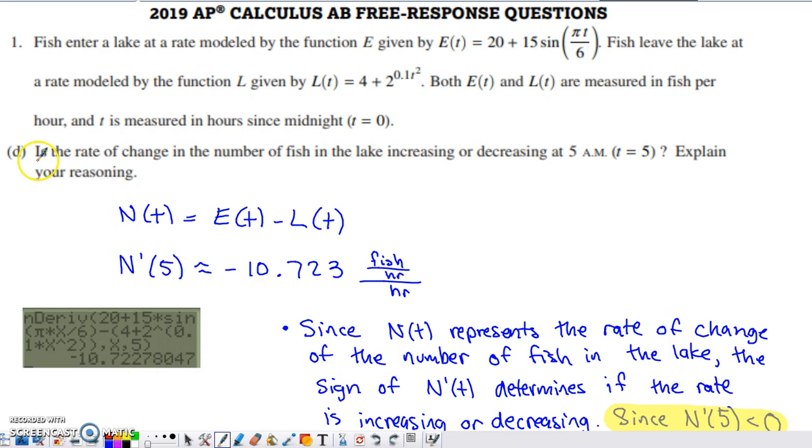And then the final part of this question asks, is the rate of change in the number of fish in the lake increasing or decreasing at time five? So it flat out says rate of change here, and then it goes on to say, is that rate of change increasing or decreasing? So we're talking about a rate of change of a rate of change here, or the derivative of a derivative.